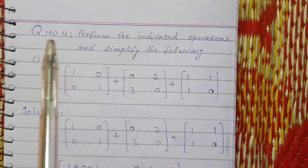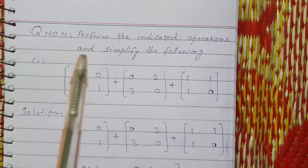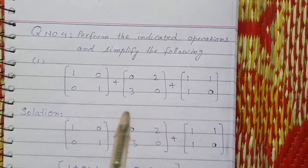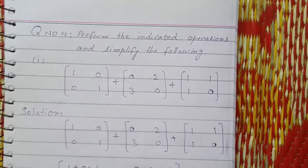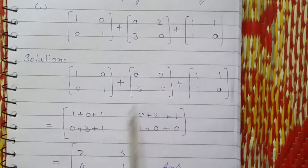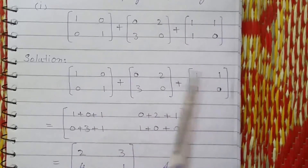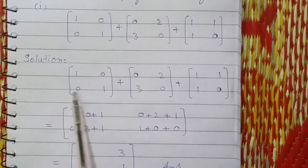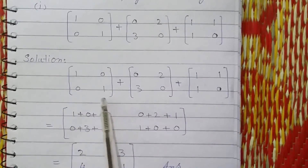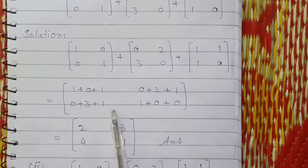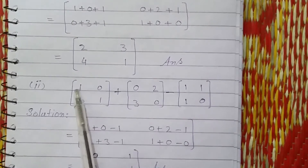Question number 4: Perform the indicated operations and simplify the following. In this question, three matrices are being added, so we will add the corresponding elements. 1, 0, and 1 are the corresponding elements; 0, 2, and 1 are corresponding elements. Similarly 0, 3, and 1 are being added, and 1, 0, and 1 are being added. So 1 plus 1 is 2; 2 plus 1 is 3; 3 plus 1 is 4.